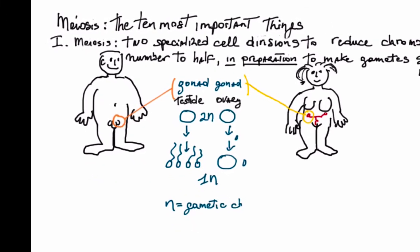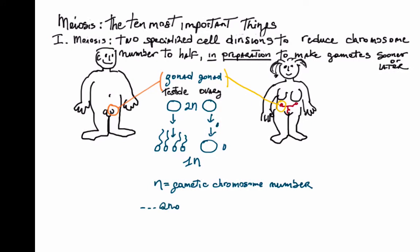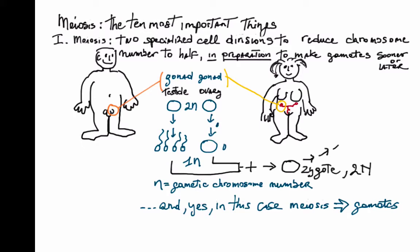The gametes are haploid, 1N, and in this case meiosis results in gametes. To continue the life cycle, fertilization forms a 2N zygote that through many mitoses forms a human baby.